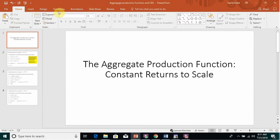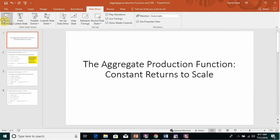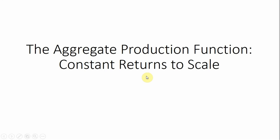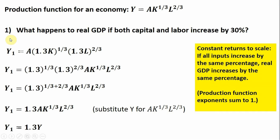Hello. In this video, we are going to look at the aggregate production function and its property of constant returns to scale. Here is a production function for an economy. Y is real GDP, K is the capital stock, and L is units of labor.